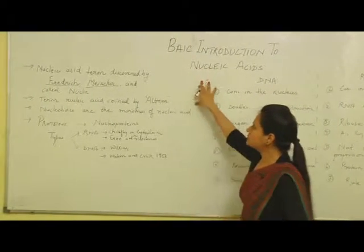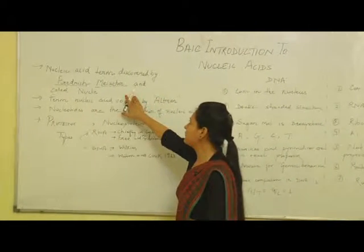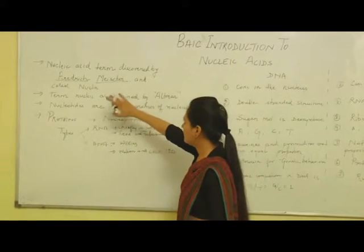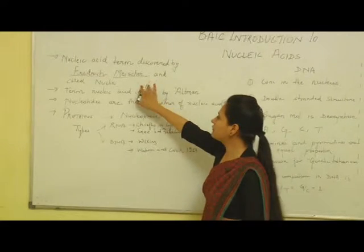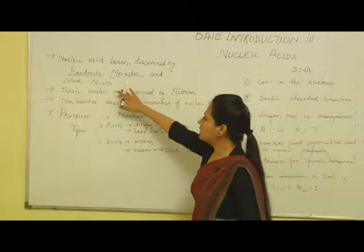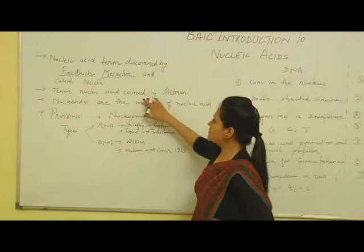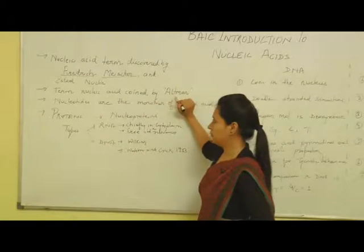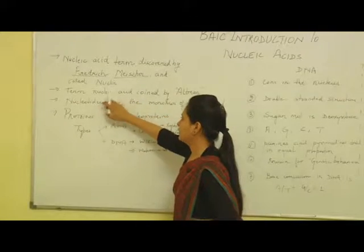The term 'nucleic acid' was first discovered by Frederick Miescher, who gave it a primitive name called 'nuclein.' Later on, the name was changed to 'nucleic acid' by Altman, and the term nucleic acid has been used ever since.